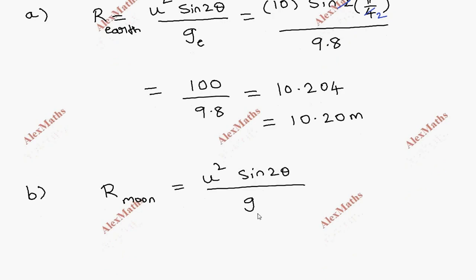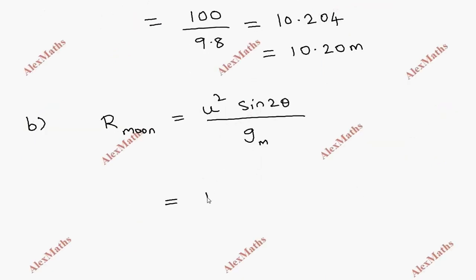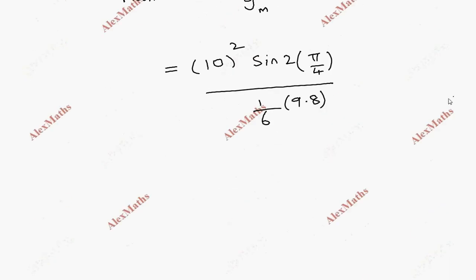But here on the Moon, the acceleration is one-sixth. So what we have to do is 10 squared sin 2 times 5 by 4, whole divided by - this is one-sixth of the acceleration due to gravity on Earth. That's 9.8 times 1 by 6. If the denominator has 6, we multiply the numerator by 6.